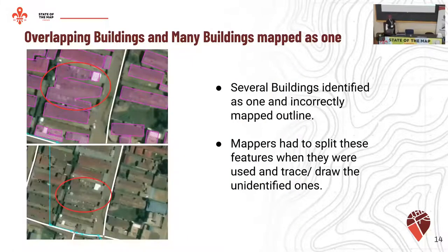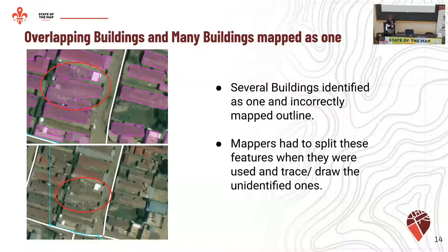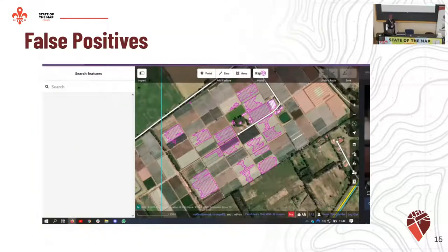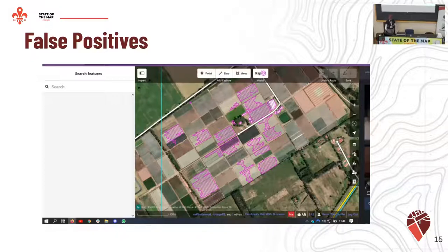We also noted overlapping buildings and many buildings mapped as one. This was mostly in areas that are quite dense — like slum areas or even places where the building rooftop color was similar to the ground. The AI would assume it's one building and people had to either split the predicted building or not use it at all and manually draw it. Then there were false positives — we would get comments in the group chat saying the AI was actually also mapping cars, mapping farmlands as buildings. Someone who doesn't know the place might think maybe it's a warehouse or a really big building, but these are farmlands.